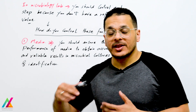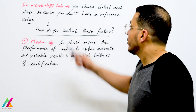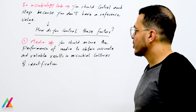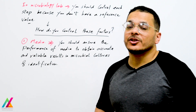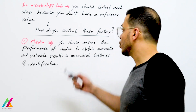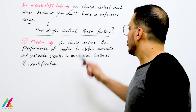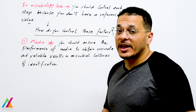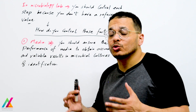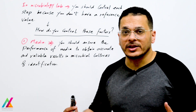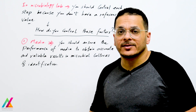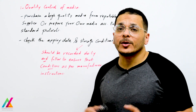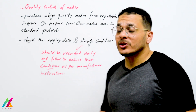First, culture media is very important. You should control the media and ensure its performance to obtain accurate and reliable results in microbial cultures and identification. Quality control of media is very important to ensure accuracy of results. A quality control program for media is a key first step.